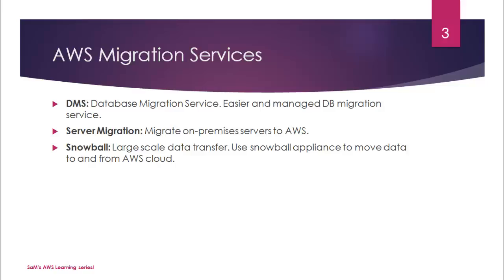Then we have something called snowball. Snowball is used for large-scale data transfer — something in the petabyte scale. You use snowball appliances to move data from and to the AWS cloud. You can move larger data chunks to AWS or from AWS to your own infrastructure through the snowball appliance. Essentially it's an appliance with petabyte-scale storage that you can order from Amazon — they will send you the snowball device.